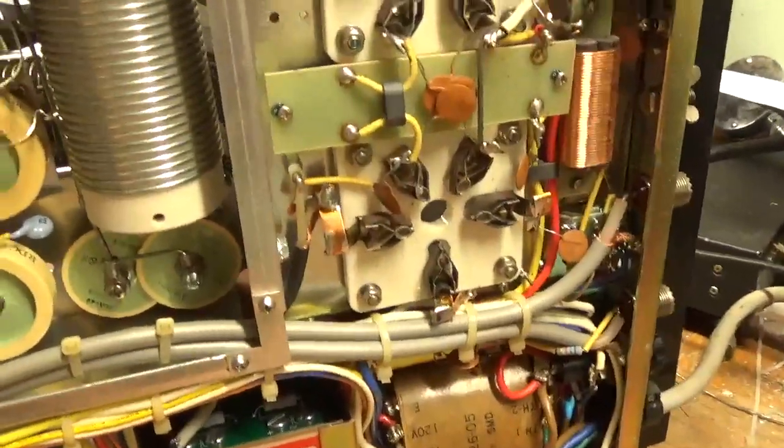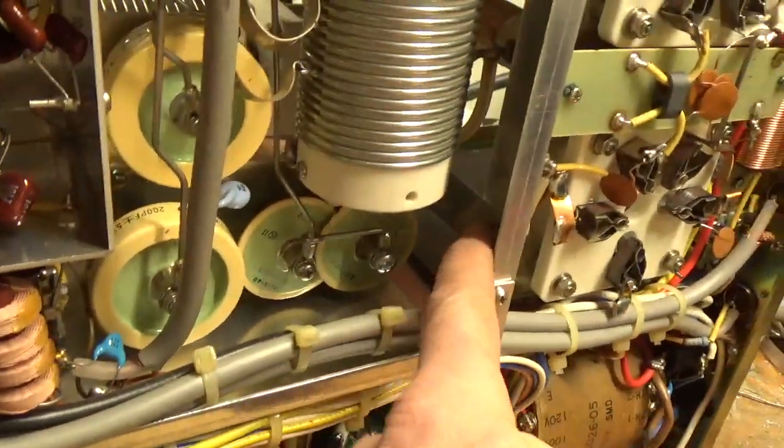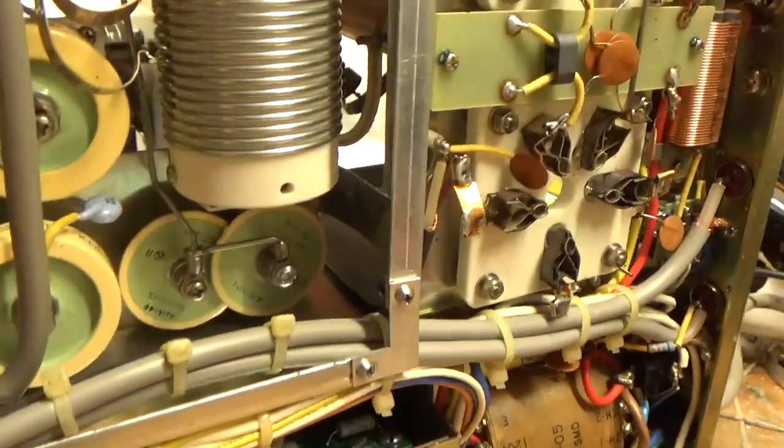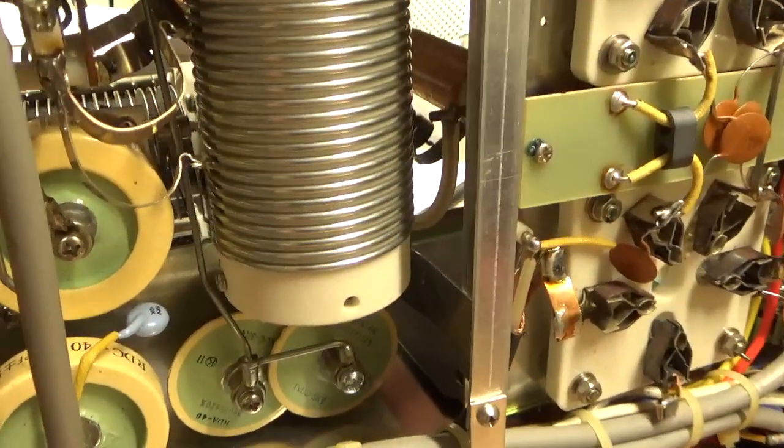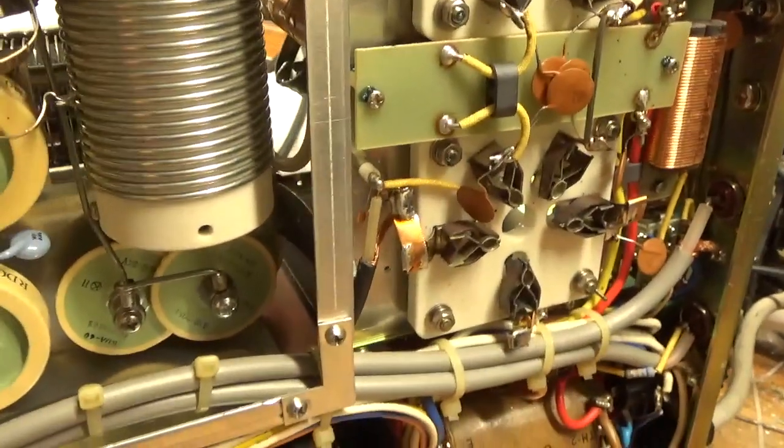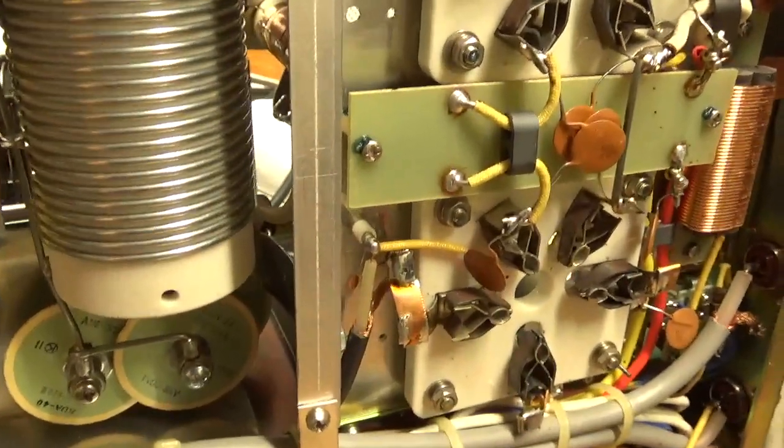Went ahead and grounded all the grids with the copper strap. Did the modification to get rid of all that extra inductance between the plate tune cap and the tube grids. It takes care of most of the parasitic issues that these are prone to having.